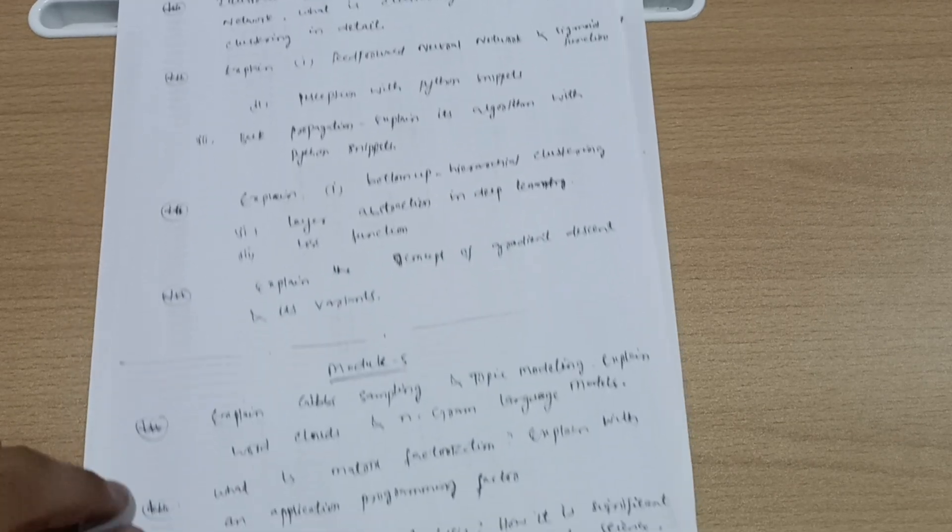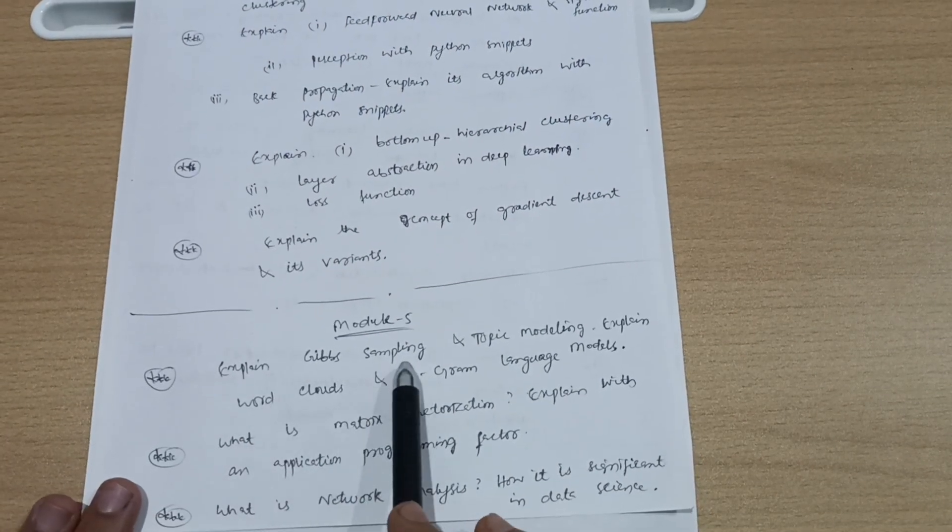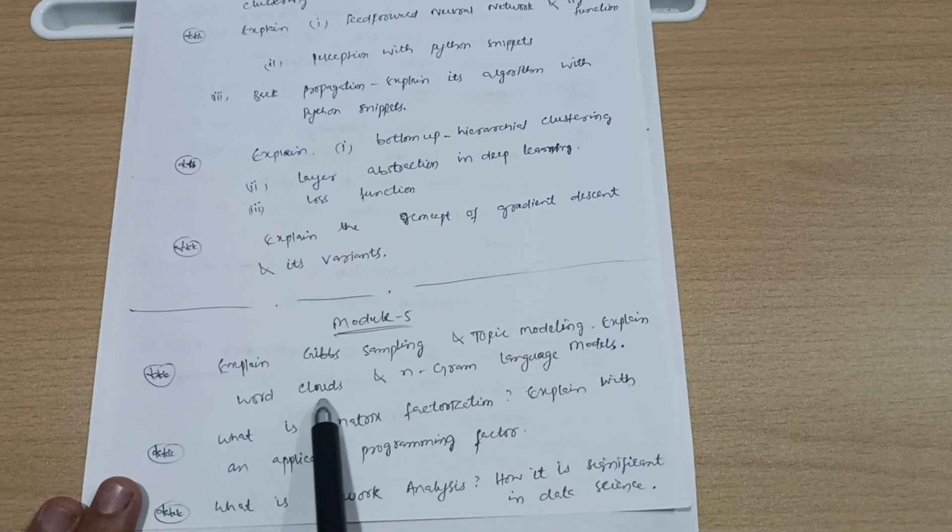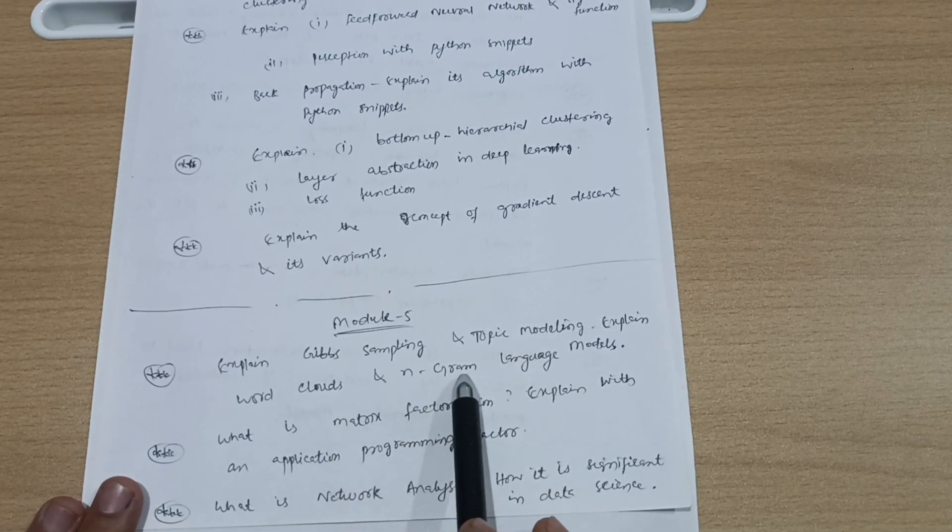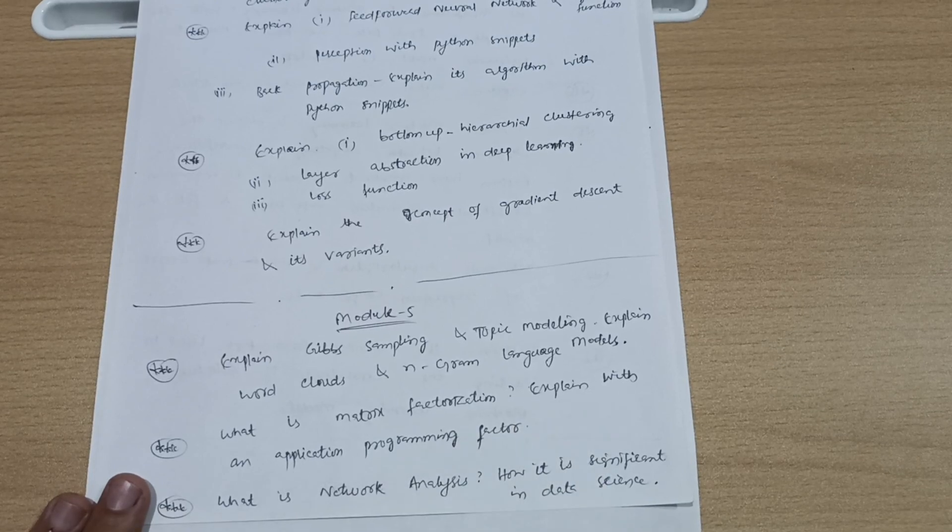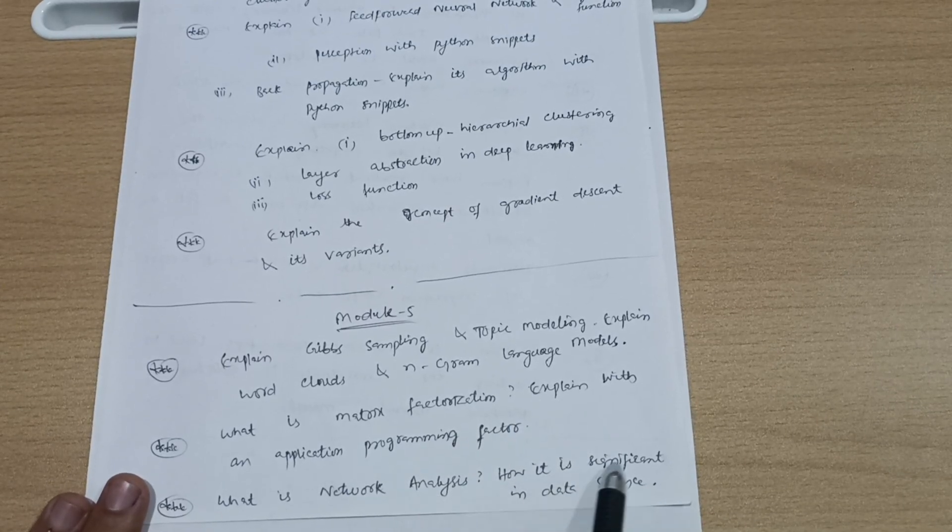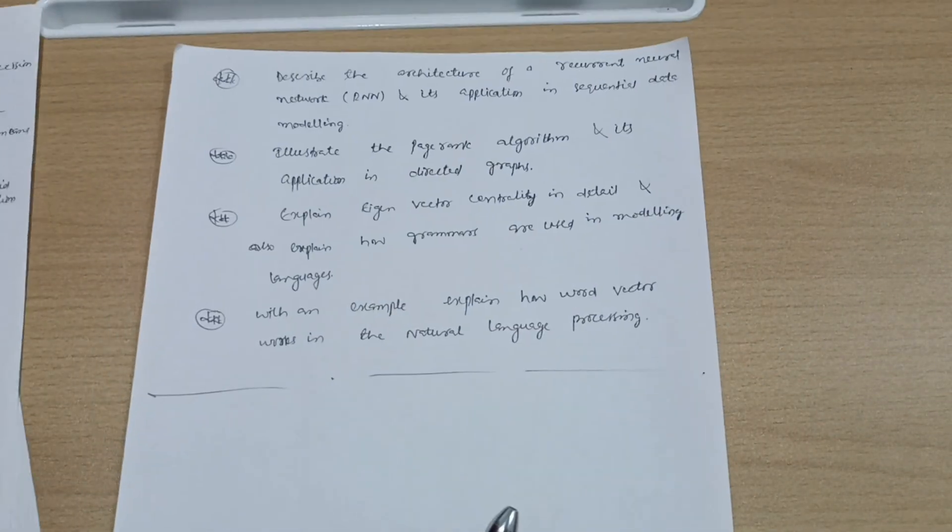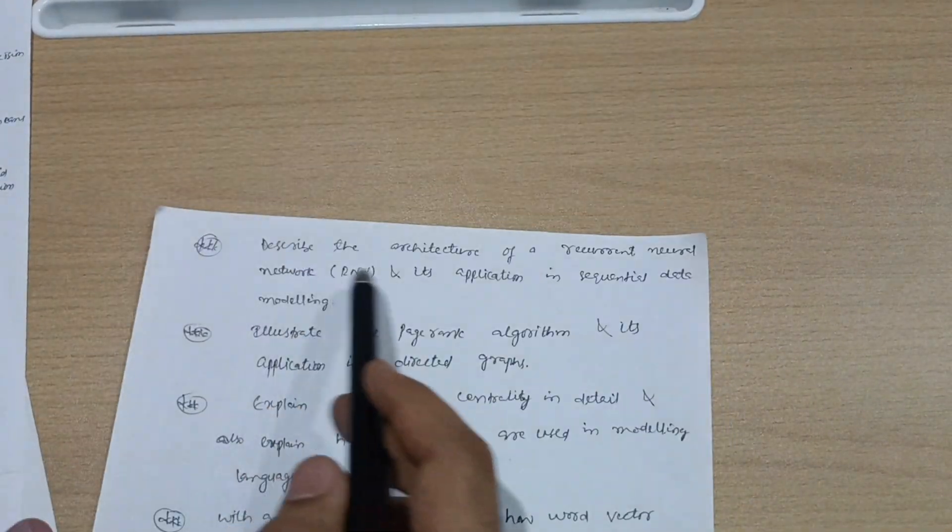Module 5: Explain Gibbs sampling and topic modeling. Explain word clouds and n-gram language models. What is matrix factorization? Explain with an application program. What is network analysis? How is it significant in data science? Describe the architecture of a recurrent neural network and its application in sequential data modeling.